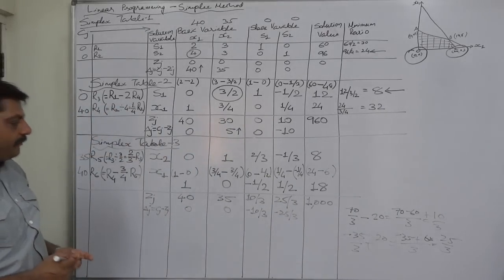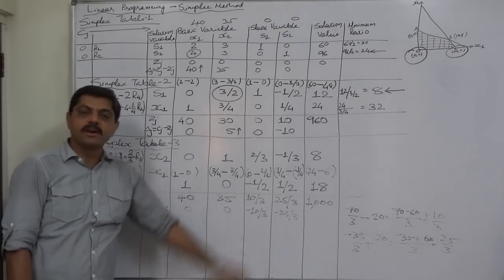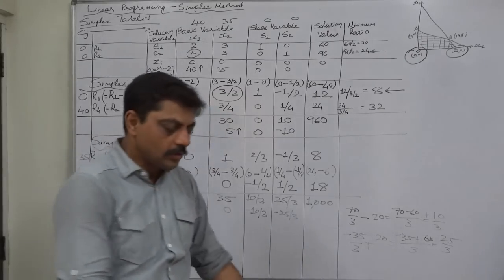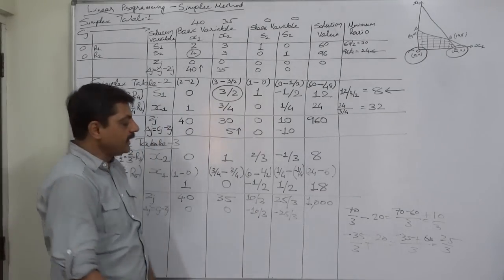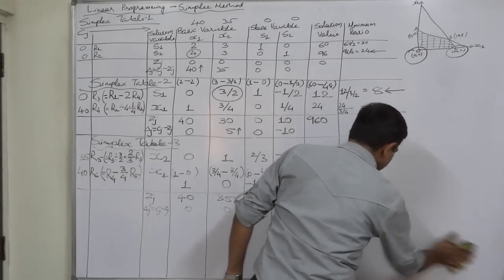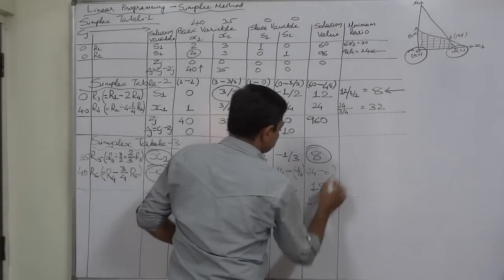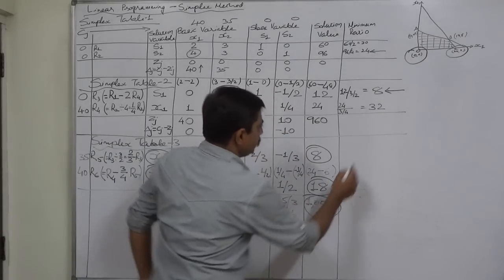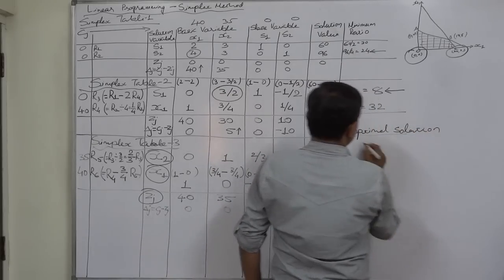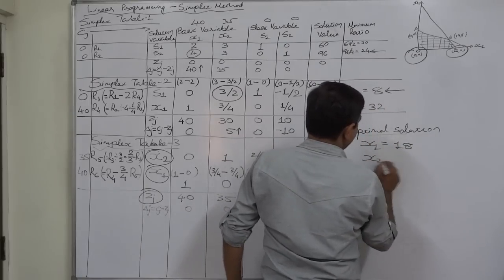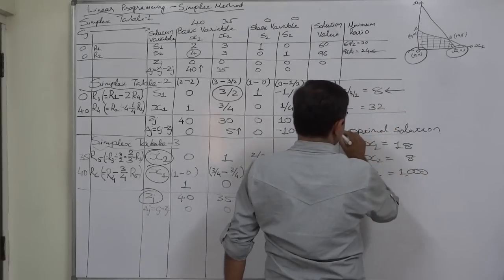This is a maximization problem, and now all delta J values are 0 or negative. In a maximization problem, to have the optimal solution, all delta J values should be 0 or negative — and we have achieved that. Therefore this is the optimal solution: x1 equals 18, x2 equals 8, and maximum Z equals 1000.